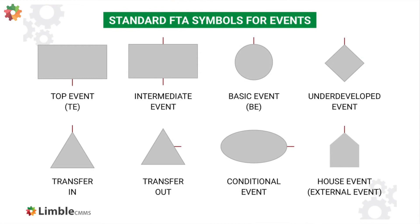Events are occurrences in a system like the failure of a subsystem or a failure of an individual component. Event symbols will have only one input and one output. The top event, TE, is the event at the top of the fault tree — oftentimes it is a catastrophic event that causes a system-wide outage. It is represented by a rectangle that has only an input without any output. Basic events, BE, represent root cause events that propagate up the chain of the system to cause a top event, and are represented by a circle with no input. Intermediate events are caused by one or more other events; BEs cause intermediate events, which eventually cause the TE. Intermediate events are represented by rectangles that have both an input and an output.